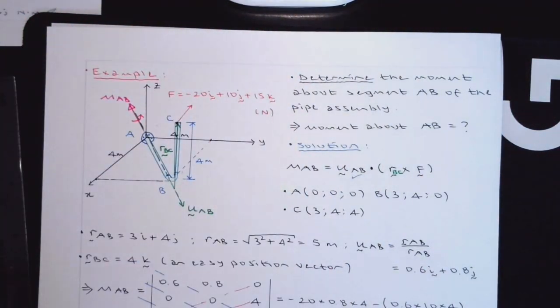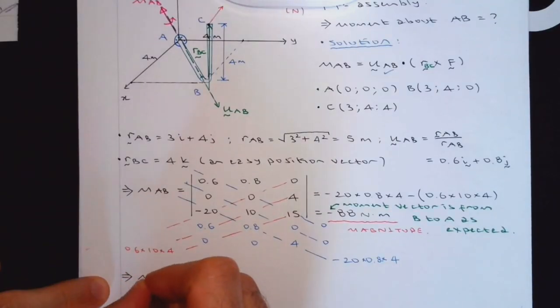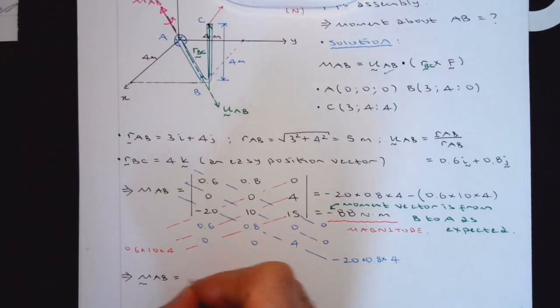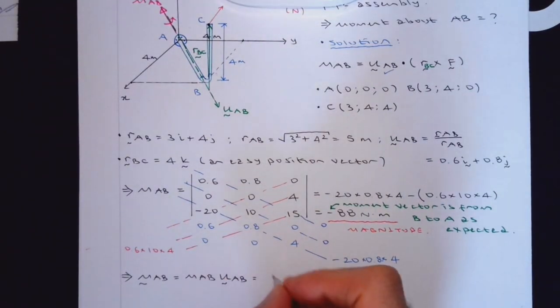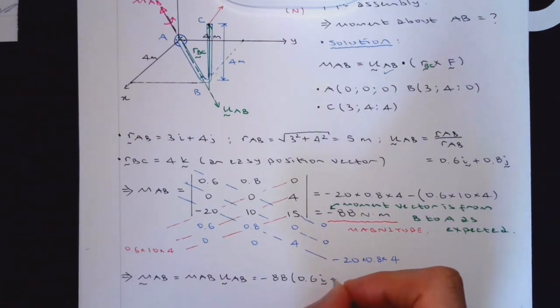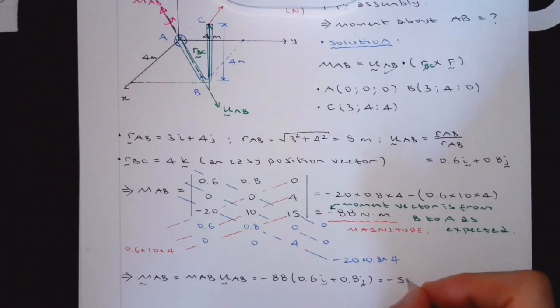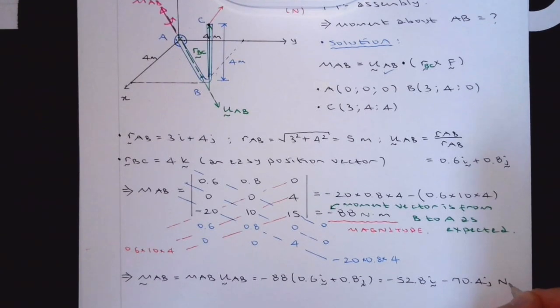Are we done? Almost. In order to get the real moment vector, what we need to do is magnitude times UAB, right? So magnitude times 0.6i plus 0.8j. That is going to be minus 0.8i minus 0.4j. And the result is Newton meter. So that's magnitude. This is the vector representation.